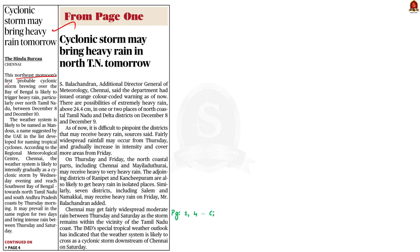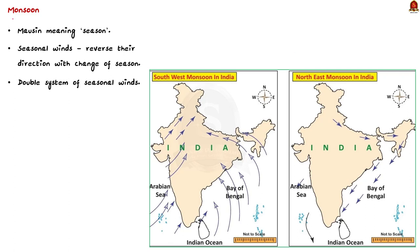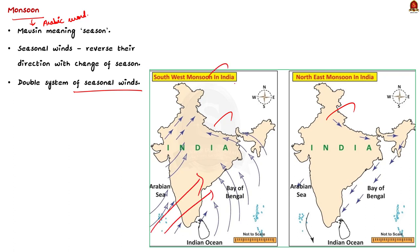This news article says that the northeast monsoon's first probable cyclonic storm is likely to trigger heavy rain. The meteorological center has warned of heavy rain particularly over northern Tamil Nadu. The term monsoon has been derived from the Arabic word 'mausin' meaning season. Monsoons are seasonal winds which reverse their direction with the change of season — a double system of seasonal winds flowing from sea to land during summer as southwest monsoon, and from land to sea during winter as northeast monsoon.